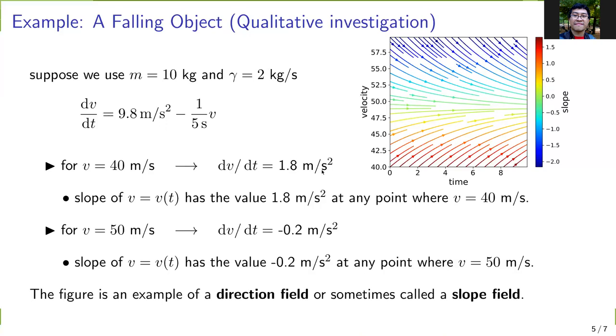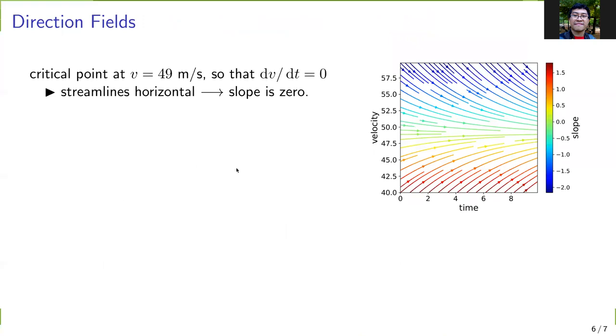The figure shown is an example of a direction field, also called a slope field. In direction fields, we can analyze by looking at a critical point at 49 m/s where the derivative is 0. At this point, we see the lines tending towards horizontal direction, so the streamlines are horizontal.